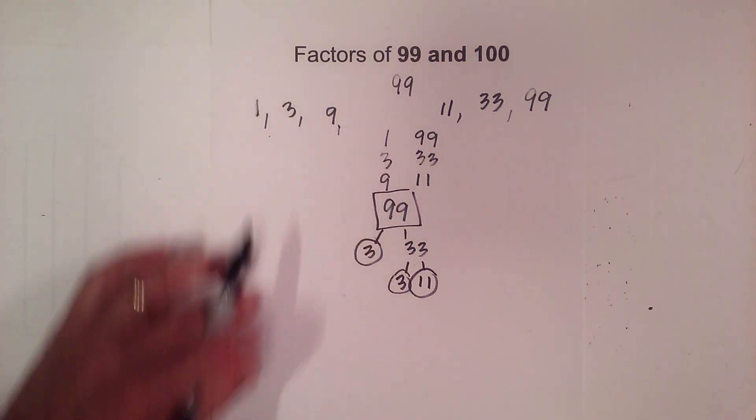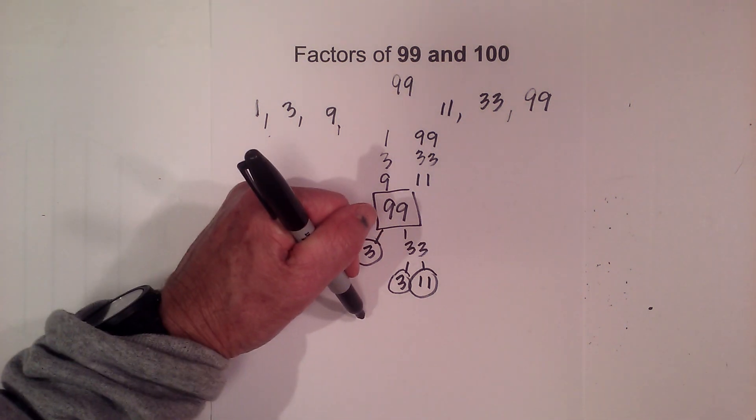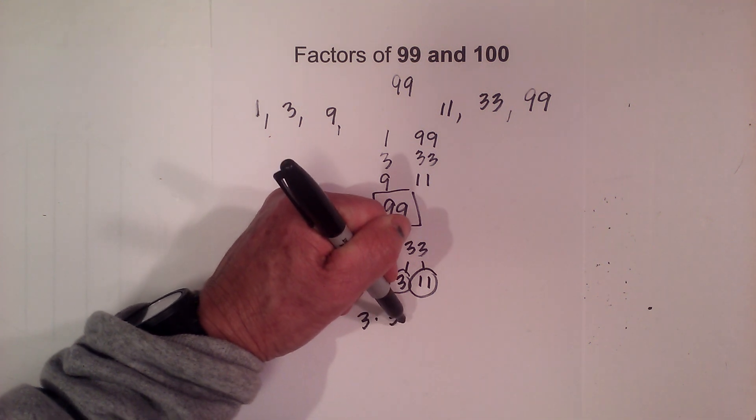Let me draw this so it's not so confusing. So the prime numbers of 99 are 3 times 3 times 11 or 3 squared times 11.